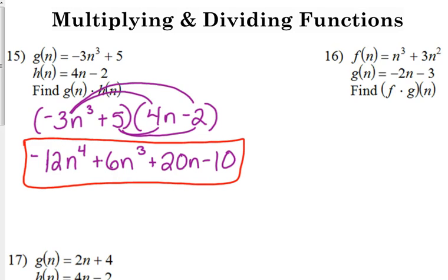16 is the same thing. It's just that other notation, f times g of n. Please do not multiply everything by n at the very end. Just multiply the two functions. If it helps you, you can write it f of n times g of n. It's the exact same thing.